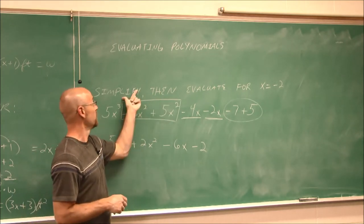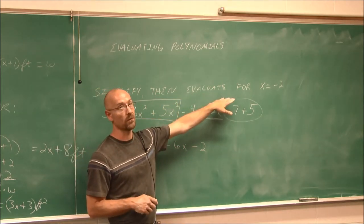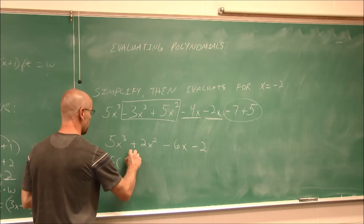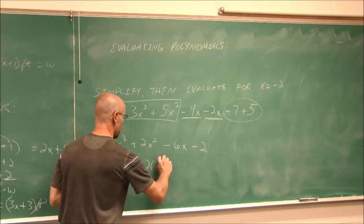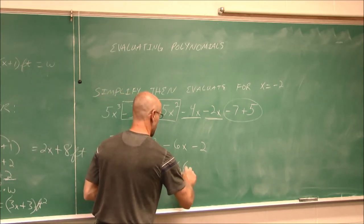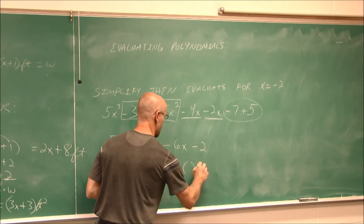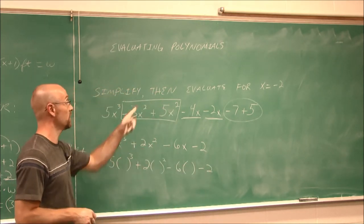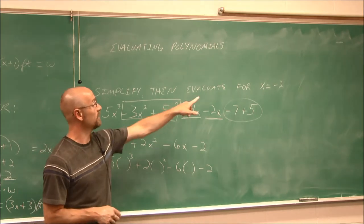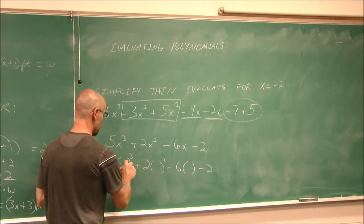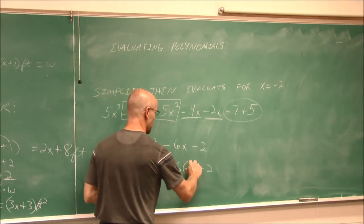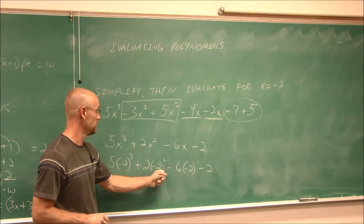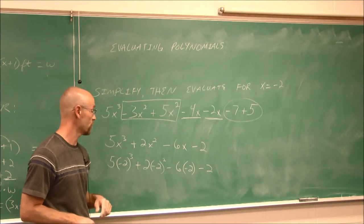Now we have to evaluate it. To evaluate, I replace all my x's with parentheses and plug in the value. If x equals negative 2, I put negative 2 everywhere I had an x — there are 3 x's, so three negative 2's.